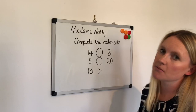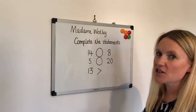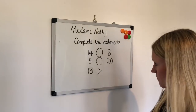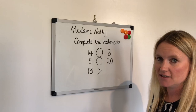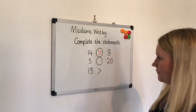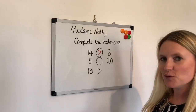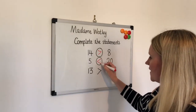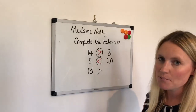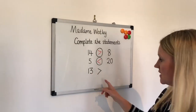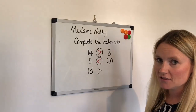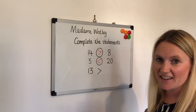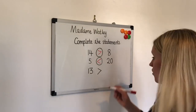In our next question we're going to be completing the statements, saying which number is more and which is less, using the greater than and less than sign. Which number is greater, 14 or 8? That's right, it's 14. Which number is greater, 5 or 20? Well done, it's 20. On this one we need to fill in a number that needs to be less than 13, because this is larger than the number. Which number is less than 13? You could have any number less than 13 — I'm going to go with 7.